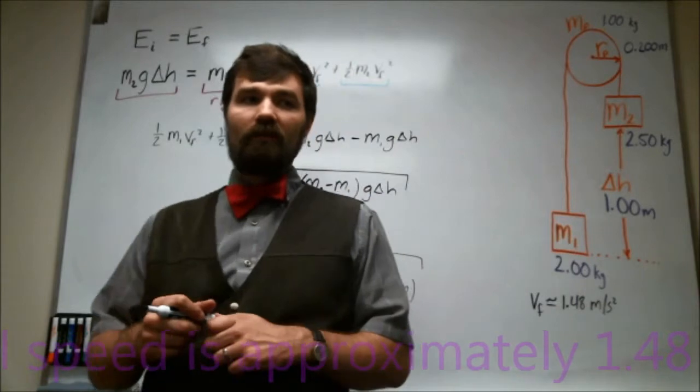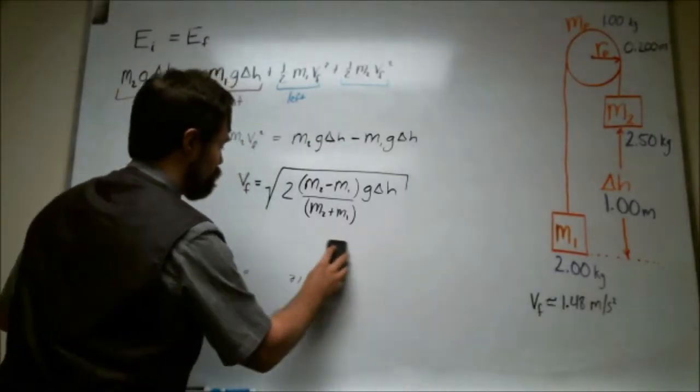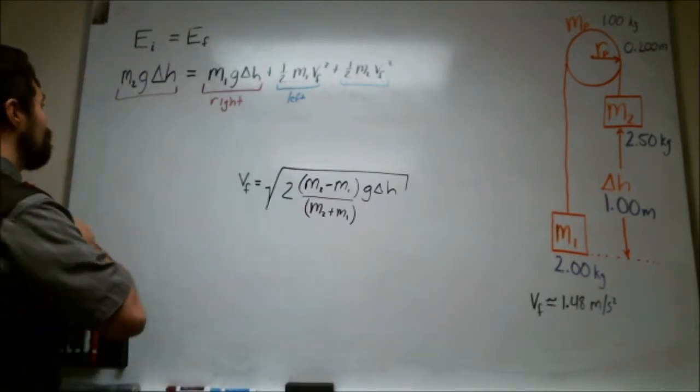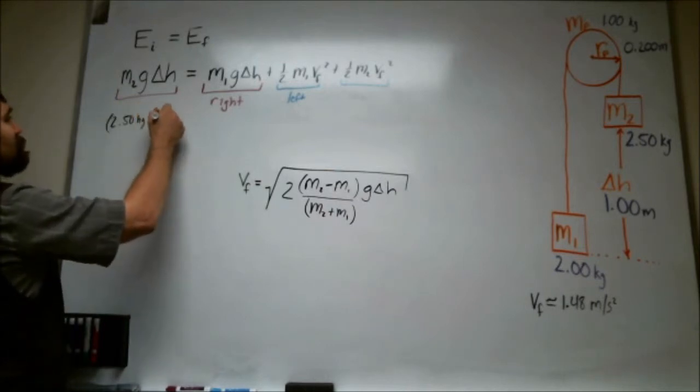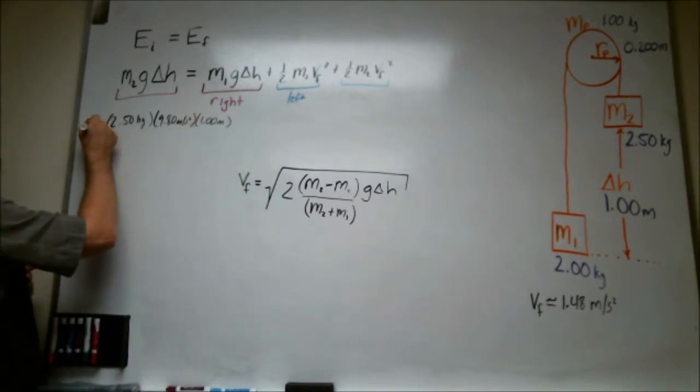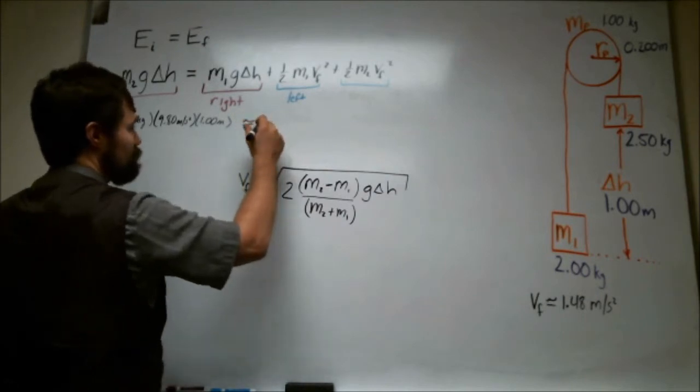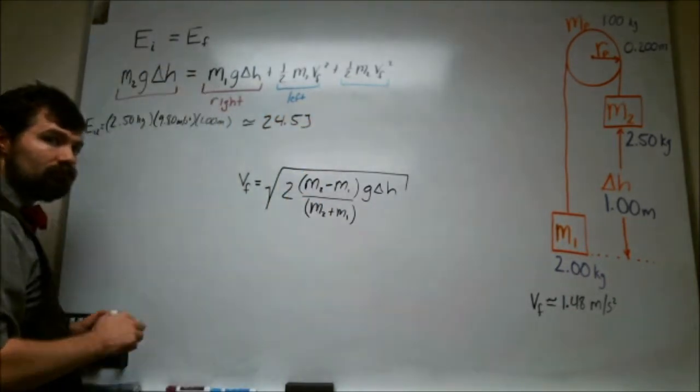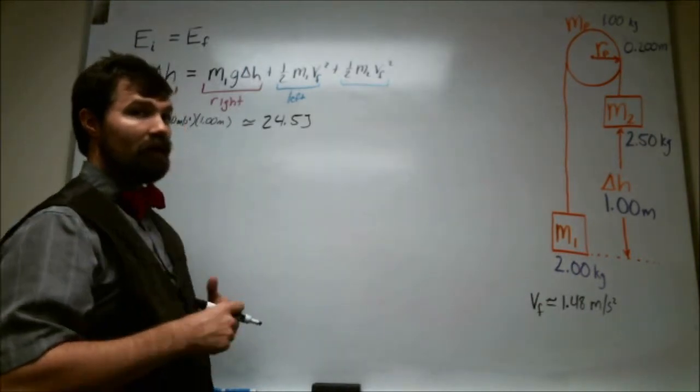Alright, well what about the energies? What are the energies going to be equal to initially and finally? To get that we might as well go back up to our top equation and just plug the numbers in there. So this one is initially we have 2.5 kilograms times 9.8 meters per second squared times 1 meter. That is the initial energy. So this is equal to 24.5 joules. Alright, well that's our initial energy for the bigger mass. Everything else is zero initially.